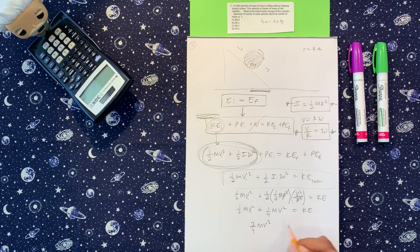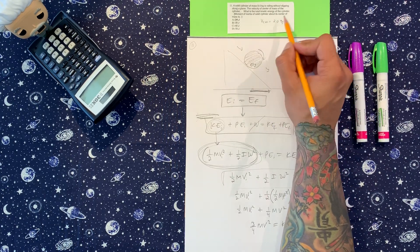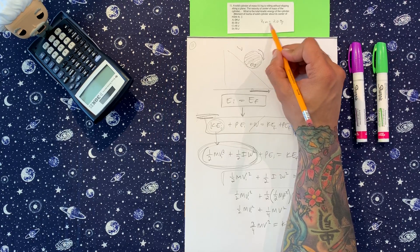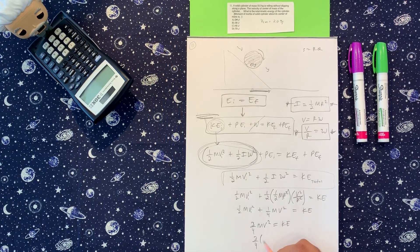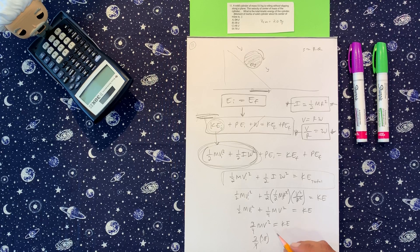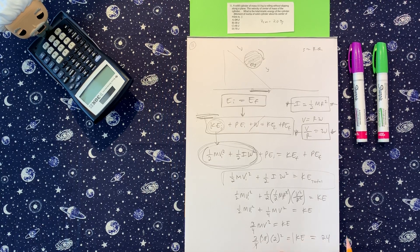We were given — or supposed to be given — the velocity of the center of mass, which is 2 m/s, and the mass is 8 kilograms. So we get three-fourths times 8 times 2 squared, which is three-fourths times 8 times 4. That gives us 24 joules.